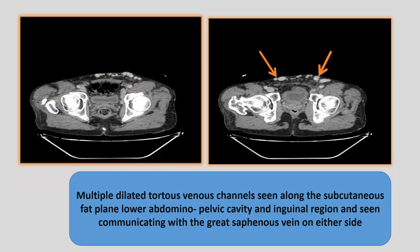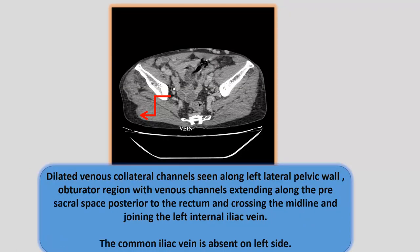There were multiple dilated tortuous venous channels seen along the subcutaneous fat plane in the lower abdominal pelvic cavity and inguinal region, seen communicating with the great saphenous vein on either side. The dilated venous collateral channels were seen along the left lateral pelvic wall and obturator region, with venous channels extending along the presacral space posterior to the rectum, crossing the midline and joining the left internal iliac vein. The common iliac vein was absent on the left side.